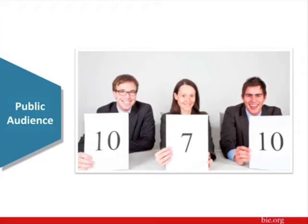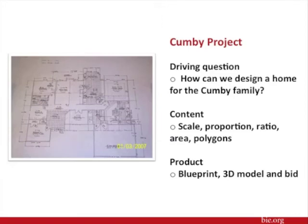Now that you have an understanding of the eight elements, here are a few more projects. The Cumby project had students design a house for a family of four with two stepchildren who visited periodically — one severely handicapped. Students created a blueprint, a 3D model, and a proposal accommodating those situations. This is a picture of a blueprint by one of the teams. Students presented their findings to a construction manager, engineers, and the Cumby family. The math content was scale, proportion, area, and polygons, and the driving question was: how can we design a home for the Cumby family?